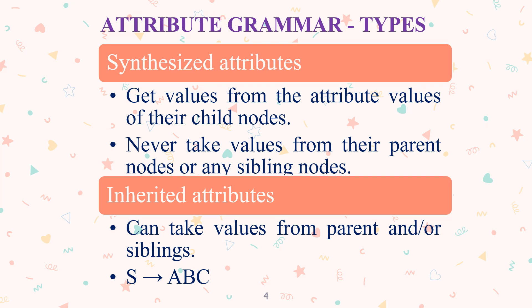There are two types of attribute grammar. First is synthesized attributes. Second is inherited attributes. Synthesized attributes can get values from the attribute values of the child nodes; they will never take values from the parent nodes or any sibling nodes.